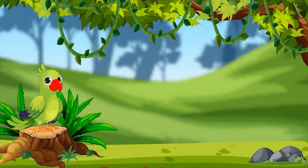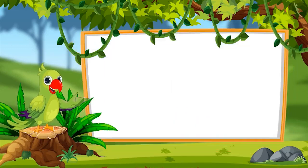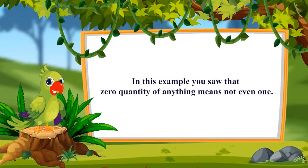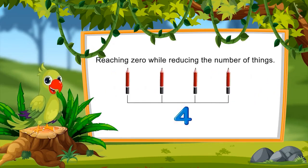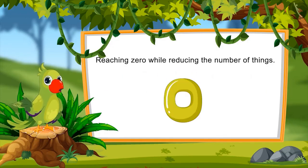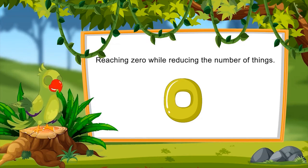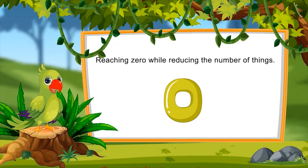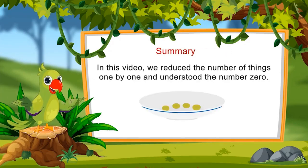Did you enjoy playing this game? So children, in this example, you saw that zero quantity of anything means not even one. Can you also one by one reduce the number of things to reach the number zero? Look at the number of things around you and reduce their number one by one until you reach zero. In this video, we reduced the number of things one by one and understood the number zero.